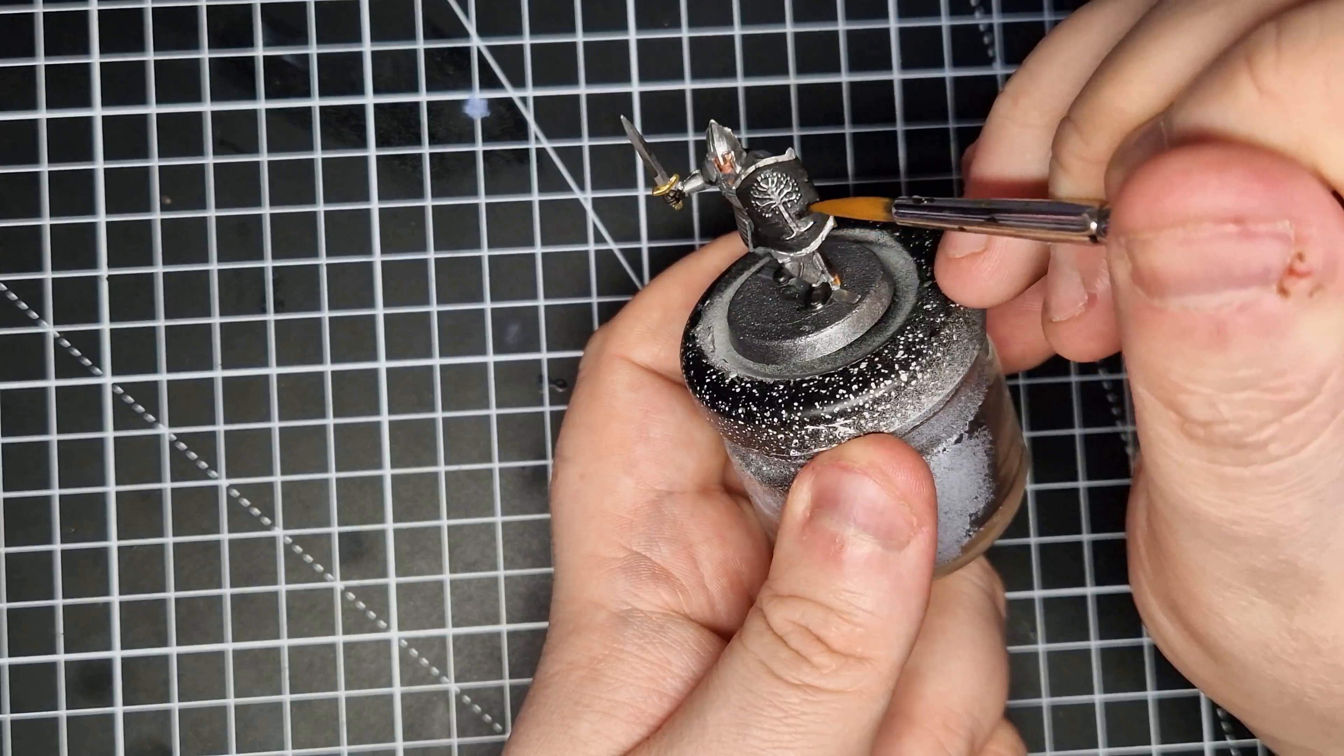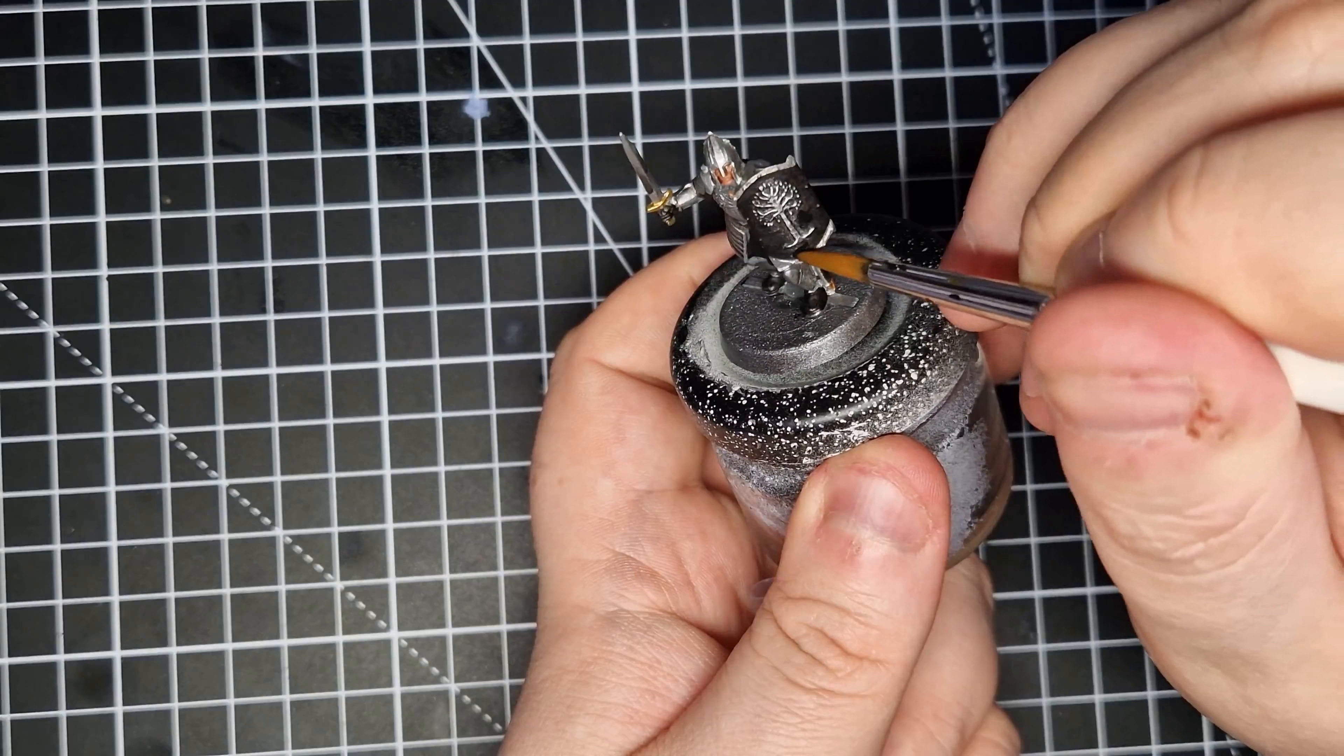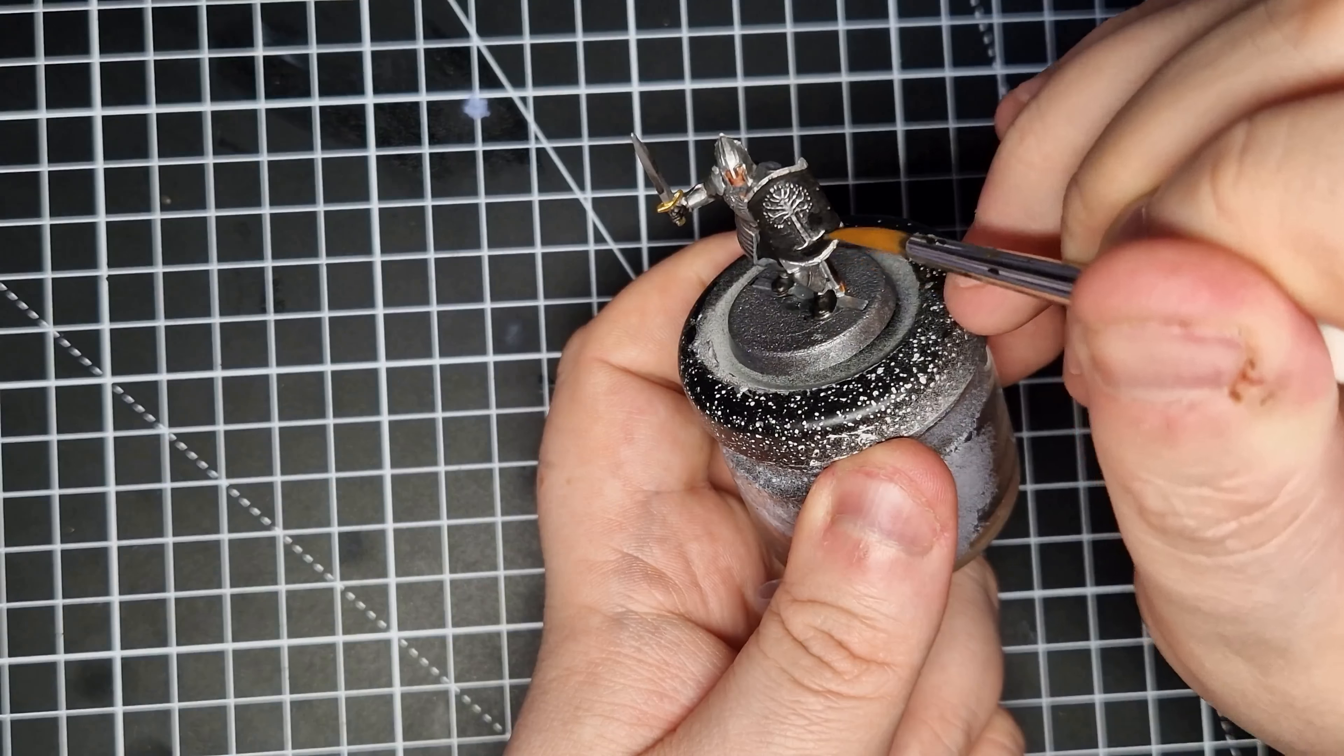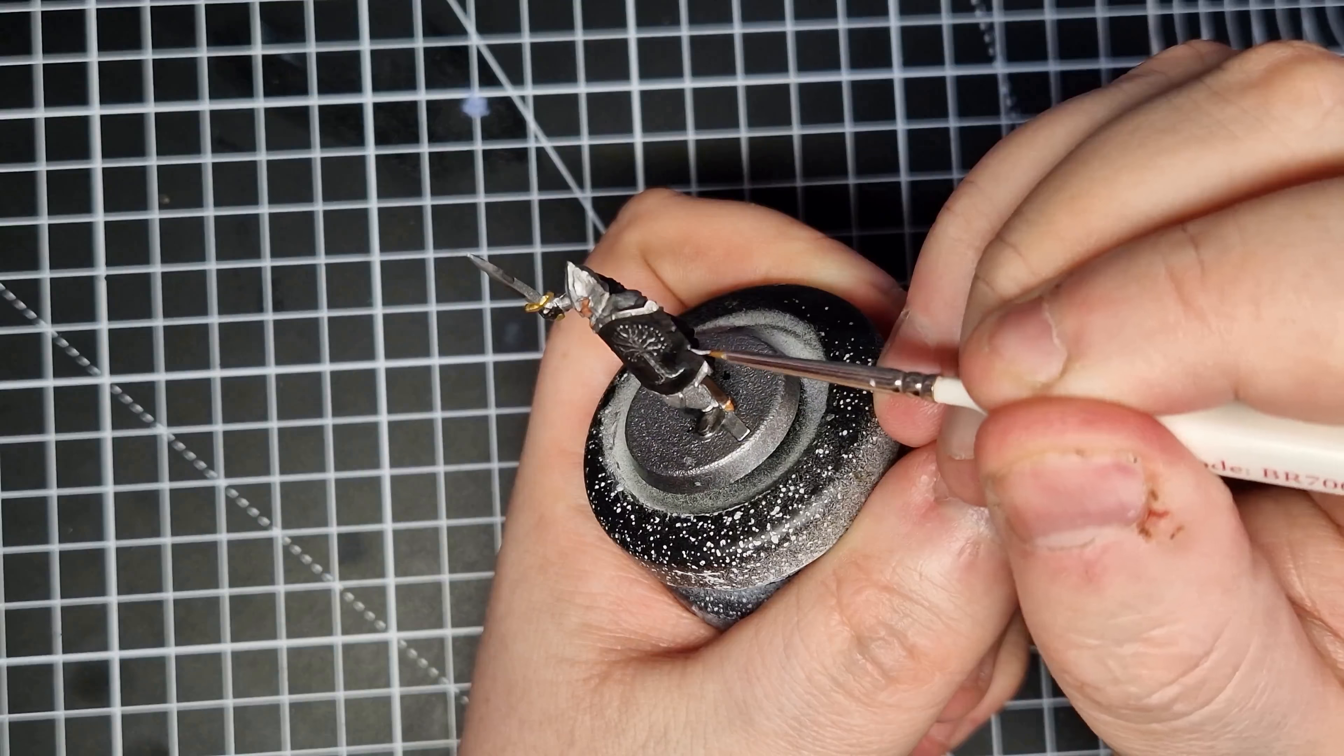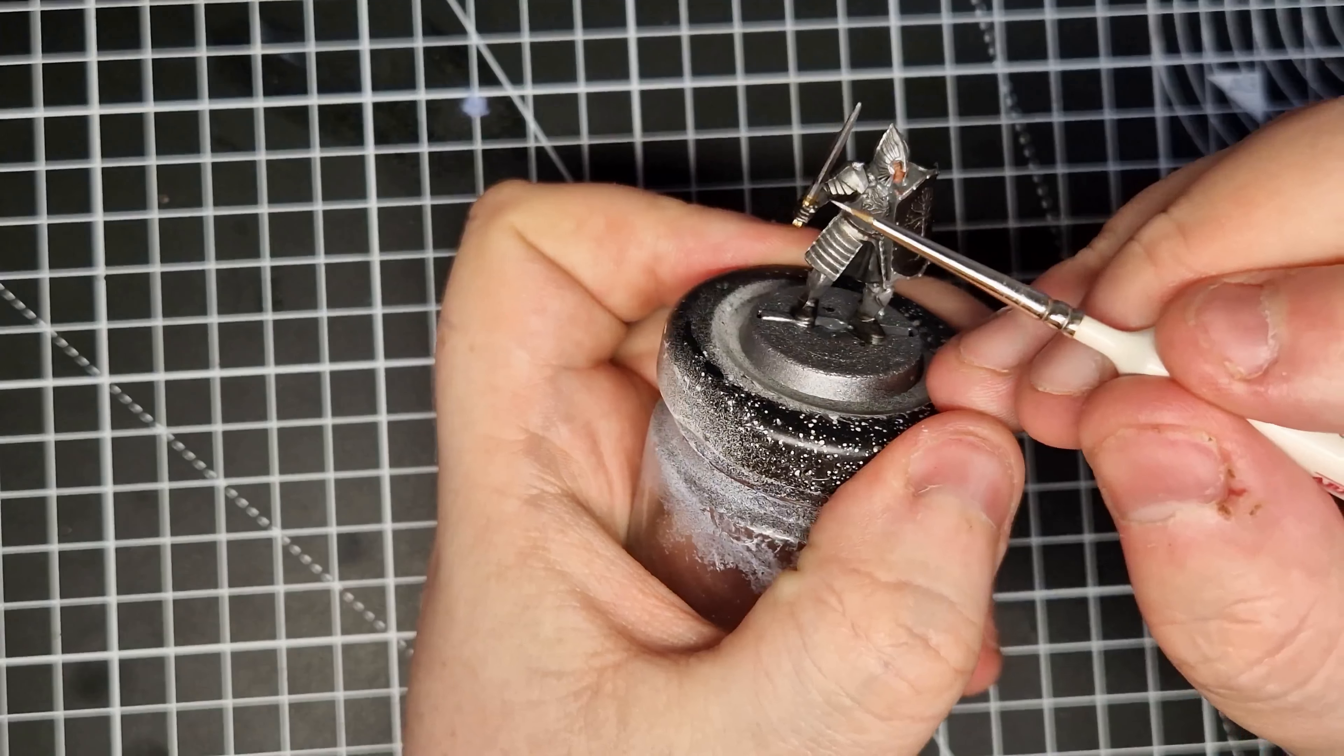And if you do make any mistakes or you do leave some silver streaks across the shield, don't worry about it at all. Just go back in with some of that watered down Abaddon Black. And then we're going to use a brush and that Stormhost Silver just to pick out those bolts on the shield as well as some of the high points of the armour and the edge of the sword as well.